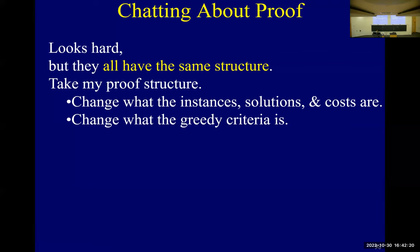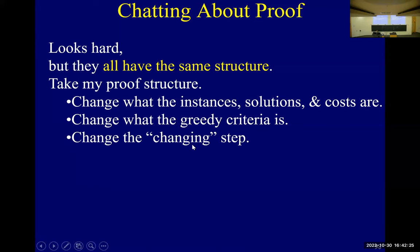You need to know what the greedy criteria is, and the paragraph which changes S_{T-1} to S_T. You need to know what's valid, what solutions are valid, and what the cost of the solution is so you know that it's optimal. And you've got to then prove it's valid — your proof has to prove it's valid.